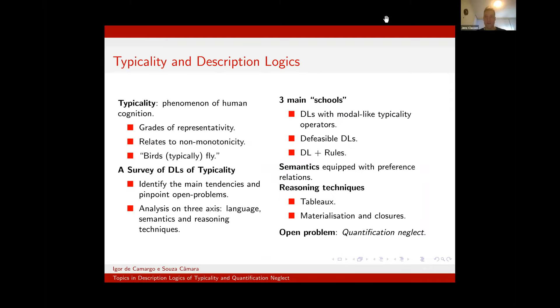Typicality is a well-known phenomenon of human cognition. It amounts to concepts having more or less representative members, and it is related to non-monotonicity, in which it allows non-monotonic inference. For example, a typical bird flies, even though not all birds fly.